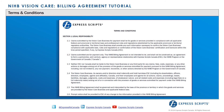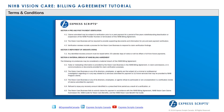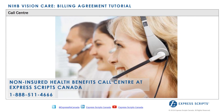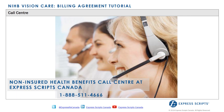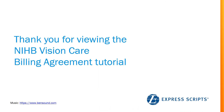In order to participate in the NIHB program, providers must review the terms and conditions, which are located on the second and third pages of the billing agreement. If providers require further clarification on how to upload the Vision Care Billing Agreement to the NIHB web account, please contact the Non-Insured Health Benefits Call Centre at Express Scripts Canada at 1-888-511-4666. Thank you for viewing the NIHB Vision Care Billing Agreement tutorial.